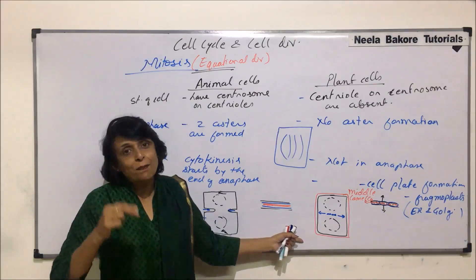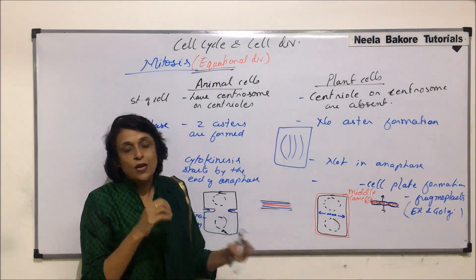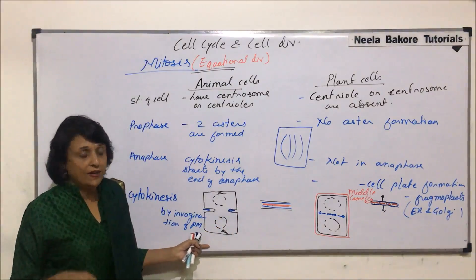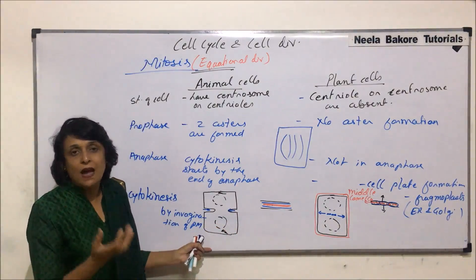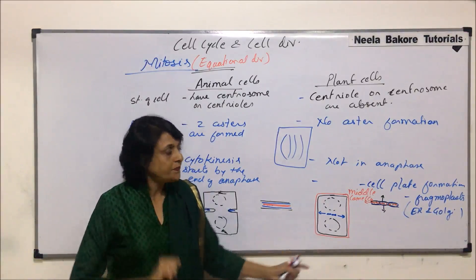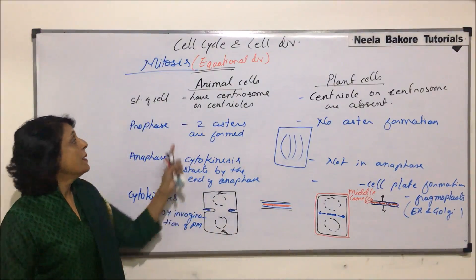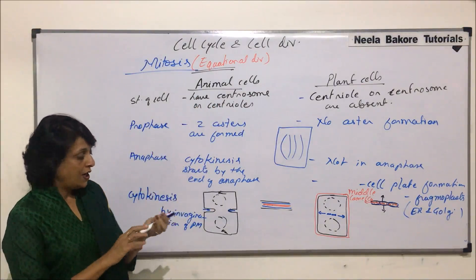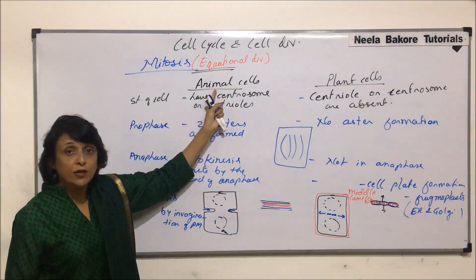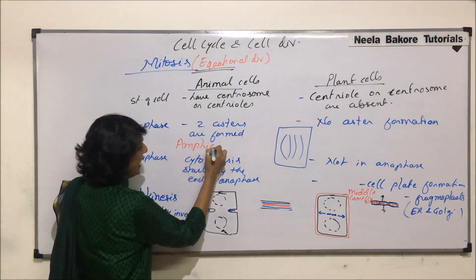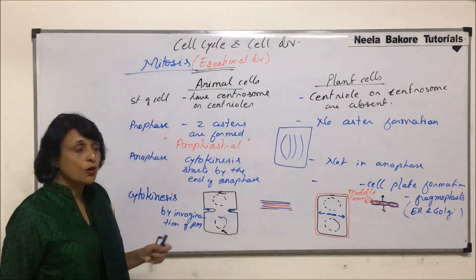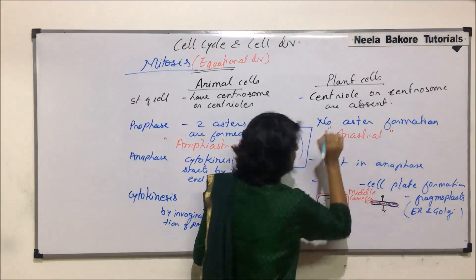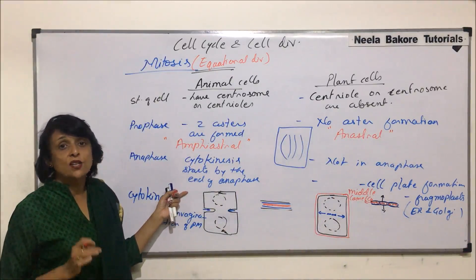The two daughter cells separate by secreting intercellular material. Plant cells normally remain close to each other even after separation, whereas animal cells can separate and move — like RBCs and WBCs. The major differences during mitotic division are: in prophase, two asters are formed in animal cells, which is why mitotic division in animal cells is called amphiastral, while in plant cells, with no aster formation, it is called anastral.